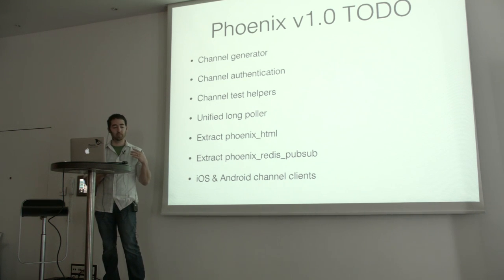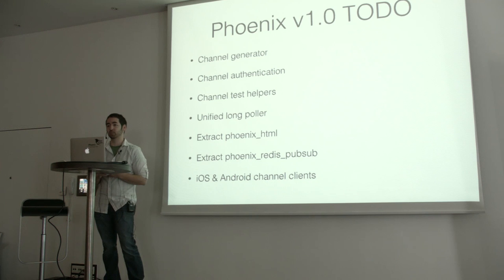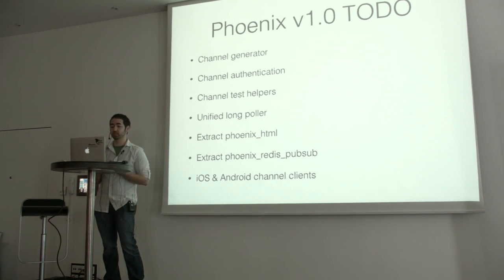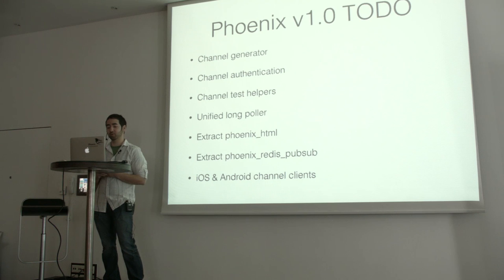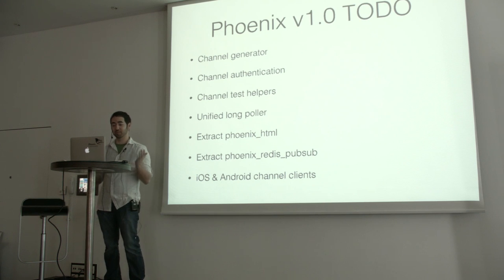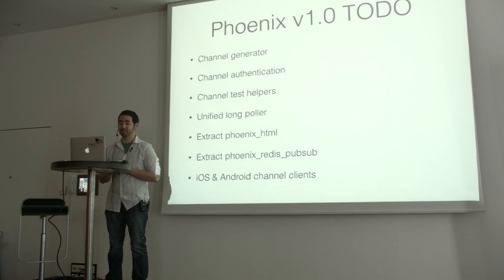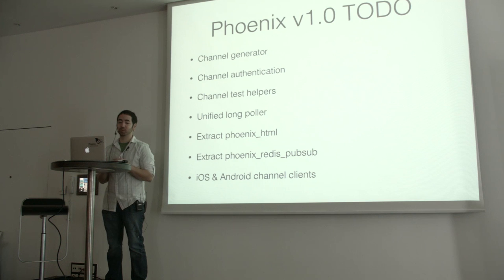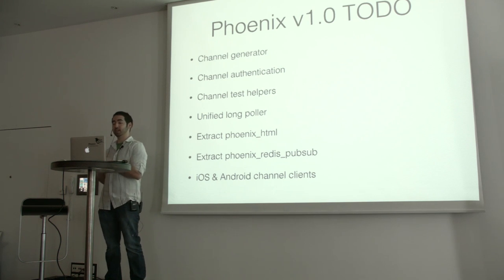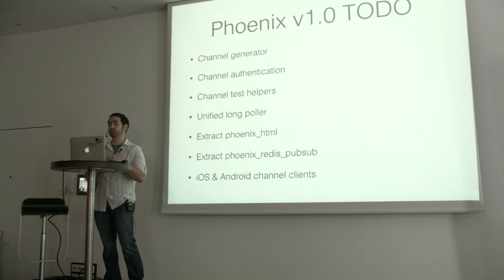We want to add some nice features like a channel generator. Channel authentication is one of the bigger ones, but as far as implementation it won't be too bad — we just want to provide an easy way to do token authentication so we don't leave that up to the user. Channel test helpers as well. Unified long polling, because long polling has made my life sad — we're special-casing it with channels and we want to have a unified interface that will solve a lot of problems and clean the code up.